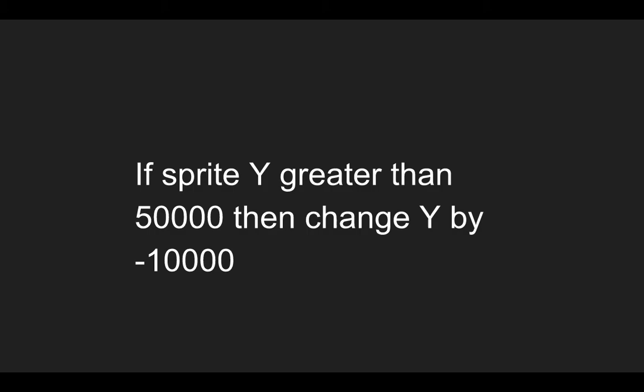If I were to highlight some of these words into groups, you'll notice that controlling words — like if or then — which are almost like conditions, are in yellow. Greater than is kind of like an operator. Y relates to motions — something to do with moving the position of the sprite. And sprite is in red to show that it's an object. Numbers are left in white text — these are values that we can type in.